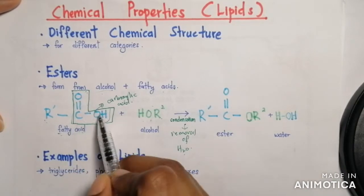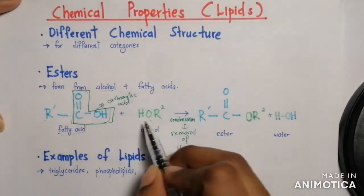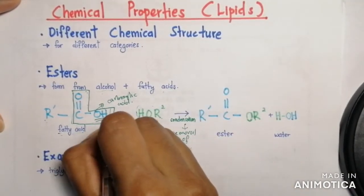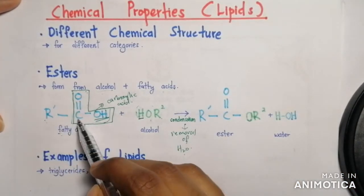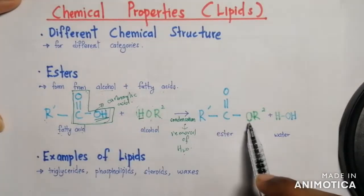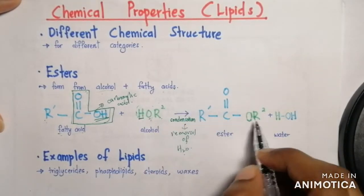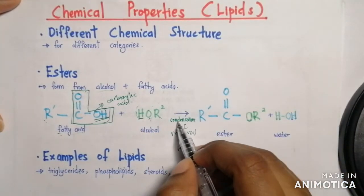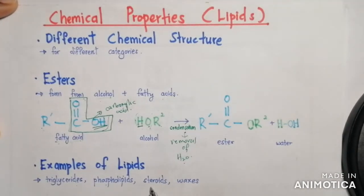In the condensation reaction, the OH in the carboxylic acid of the fatty acid is removed, and the H from the hydroxyl group of the alcohol is removed. These combine to form water, and the remaining parts — the hydrocarbon, the carbon bonded to oxygen, and the alcohol's oxygen and hydrocarbon — combine to form an ester. Examples of lipids are triglycerides, phospholipids, steroids, and waxes.